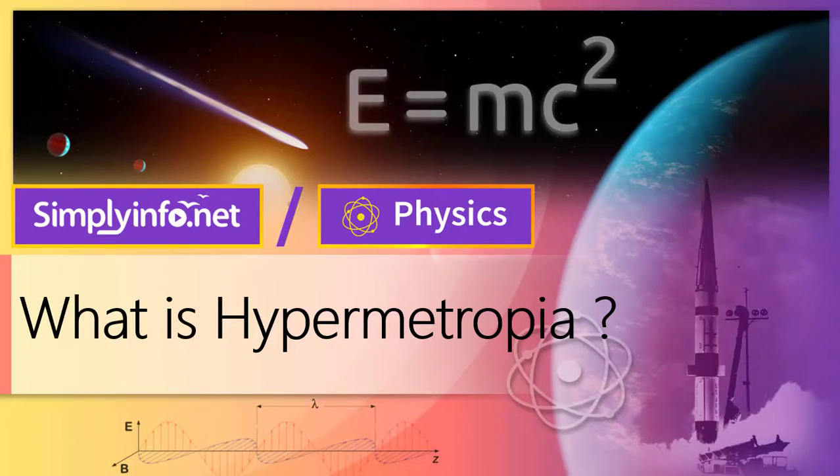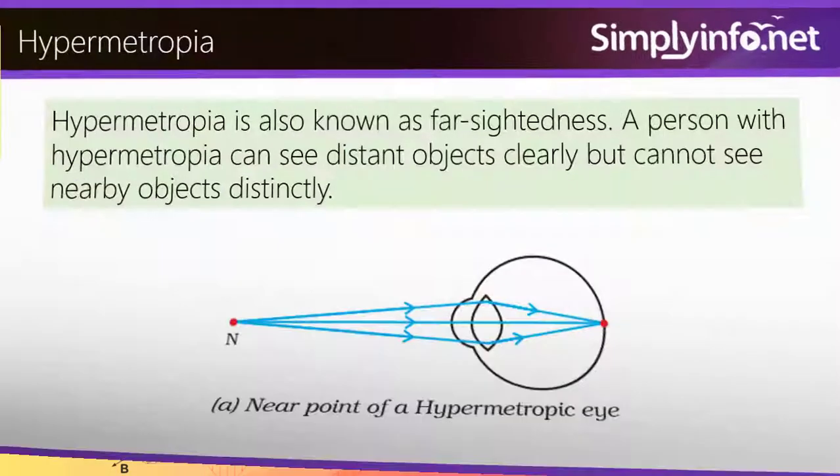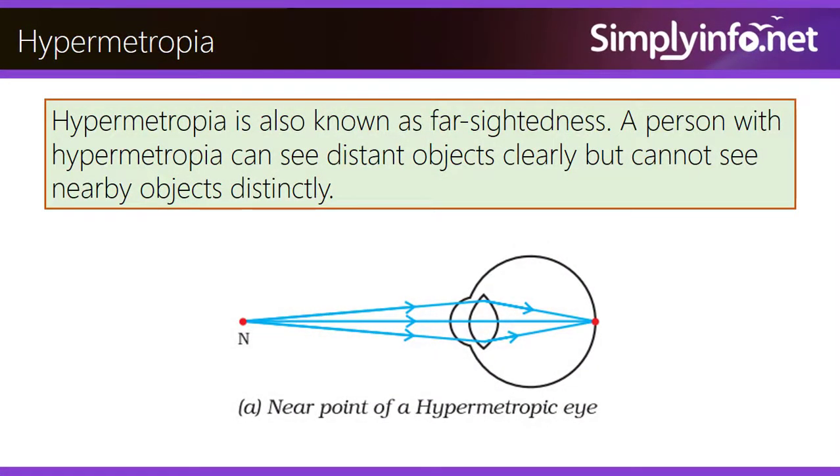What is hypermetropia? Hypermetropia is also known as farsightedness. A person with hypermetropia can see distant objects clearly but cannot see nearby objects distinctly.